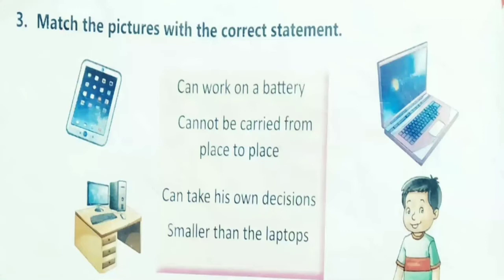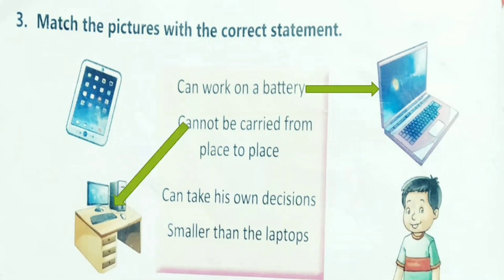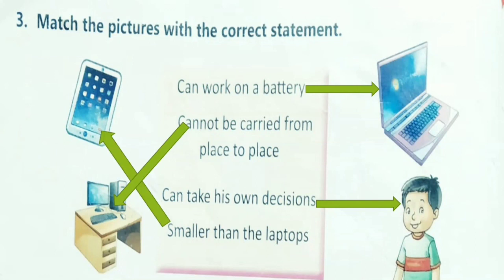Now let us see the next activity: match the pictures with the correct statement. First statement: can work on a battery — which computer works on a battery? It is laptop. Very good. Second: cannot be carried from place to place — which computer cannot be carried? It is a desktop computer. Third: can take his own decisions — who can take his own decisions? It is human. Very good. The last one: smaller than the laptops — which computer is smaller in size than the laptop? It is tablet computer. Very good.